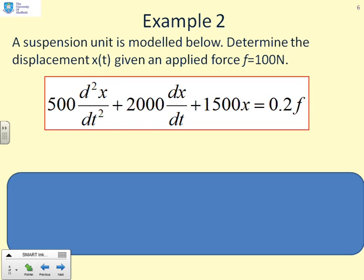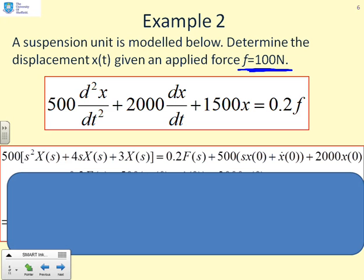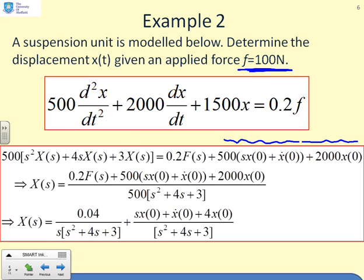A second example then. And you'll notice this example is second order. So 500 d²x/dt² plus 2000 dx/dt plus 1500x equals 0.2f. And you're given f is 100 newtons. This system represents a suspension unit. Now again, we're going to use exactly the same steps as before. First, take Laplace transforms of everything in this equation. And this is what you get. 500 times s²x plus 4sx plus 3x equals 0.2f(s) plus 500sx(0) plus x dot of 0 plus 2000x(0). You will notice that including all these initial conditions is a bit messy. But if you've got initial conditions, that's what you'll have to do.